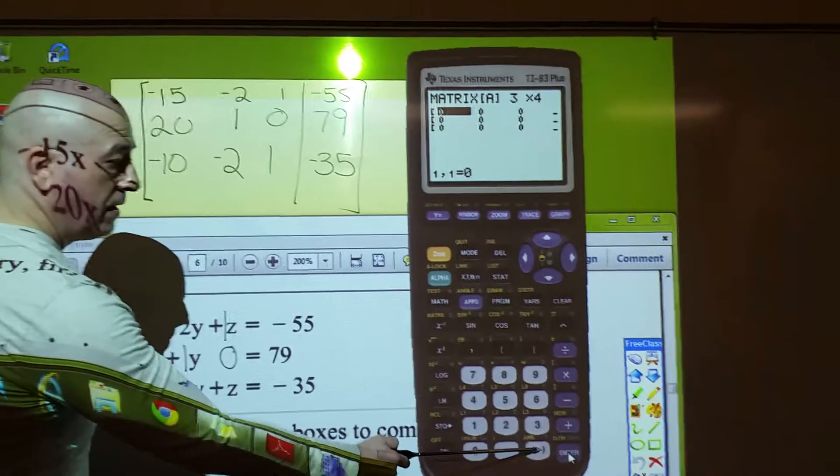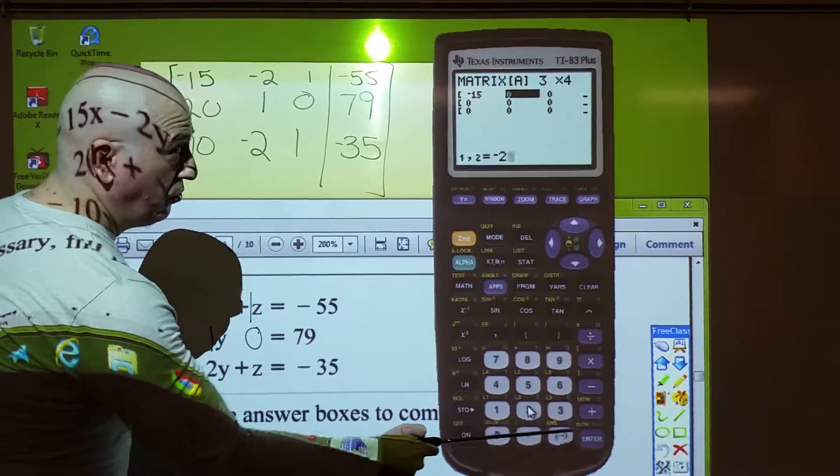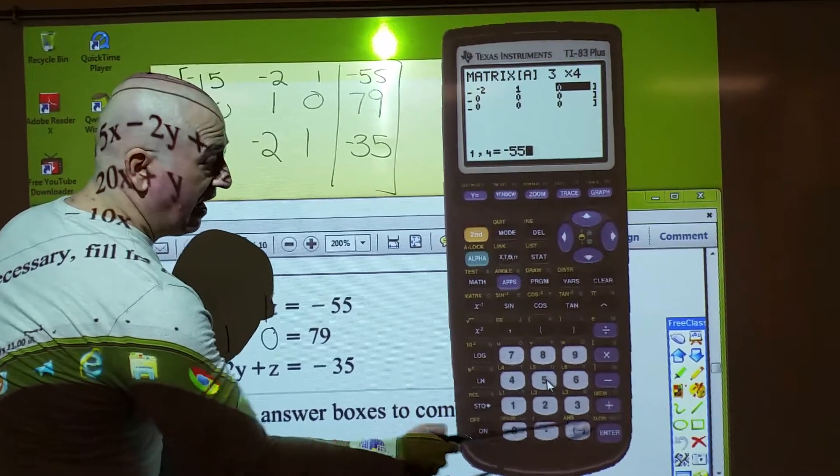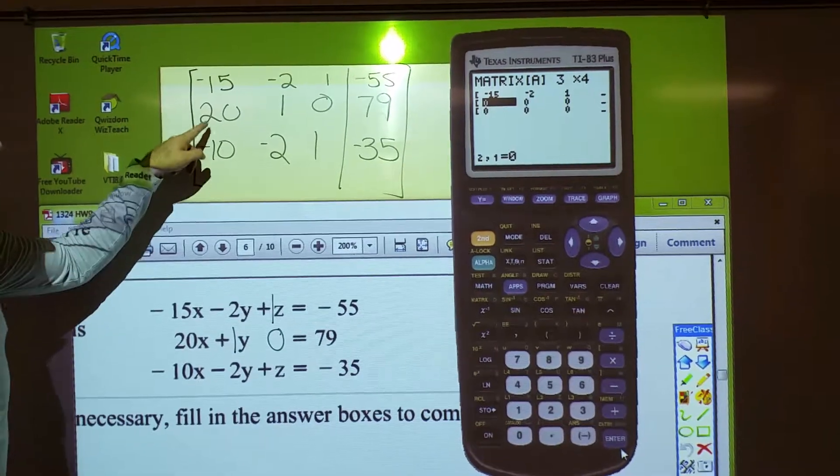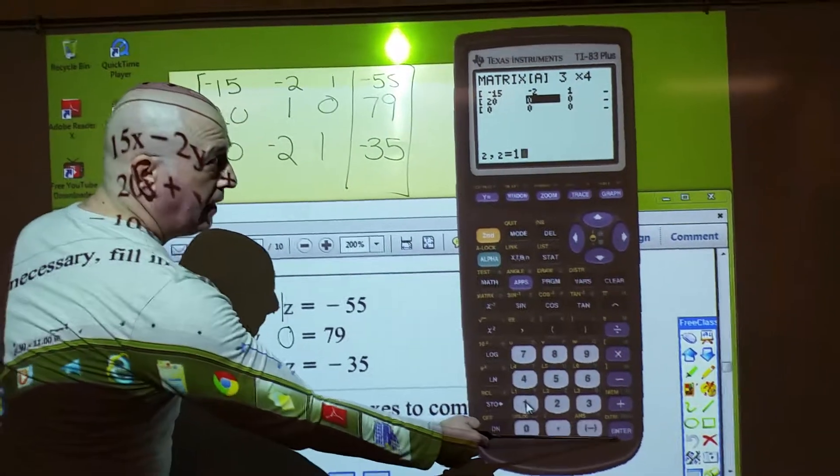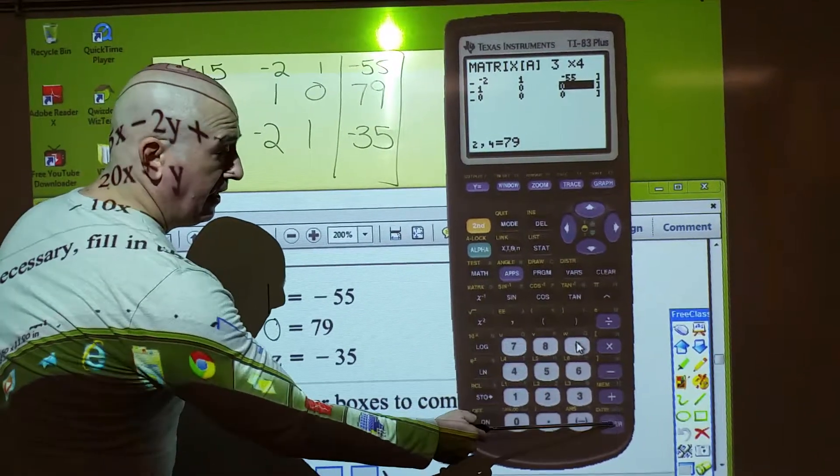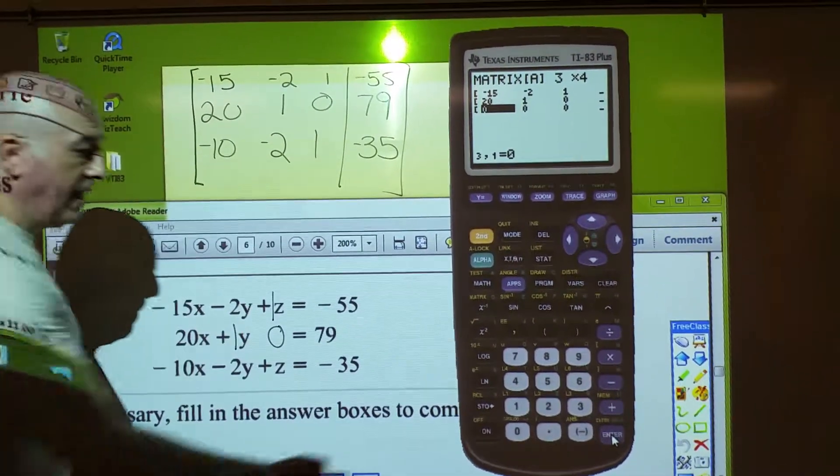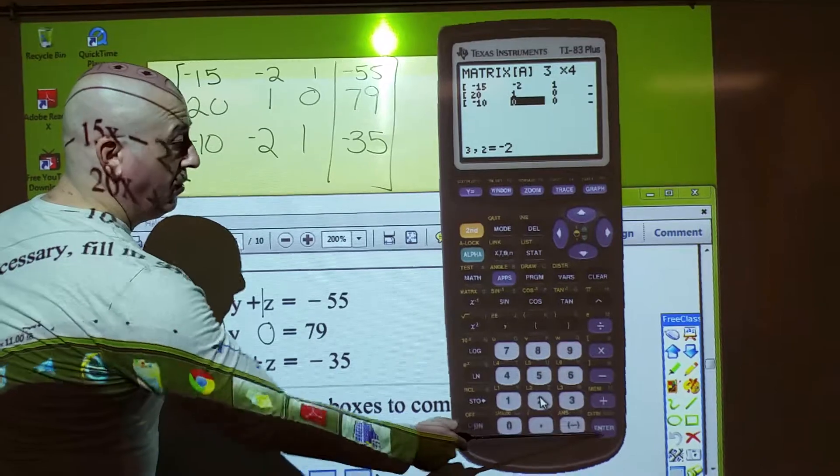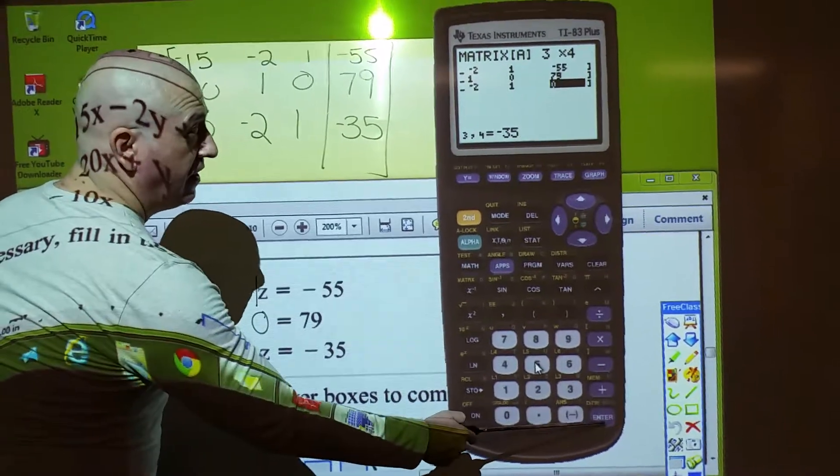Now, we go through, punching in these numbers. Negative 15, enter, negative 2, enter, 1, enter, negative 55, enter. 20, enter, 1, enter, 0, enter, 79, enter. Let's see, negative 10, enter, negative 2, enter, 1, enter, negative 35, enter.